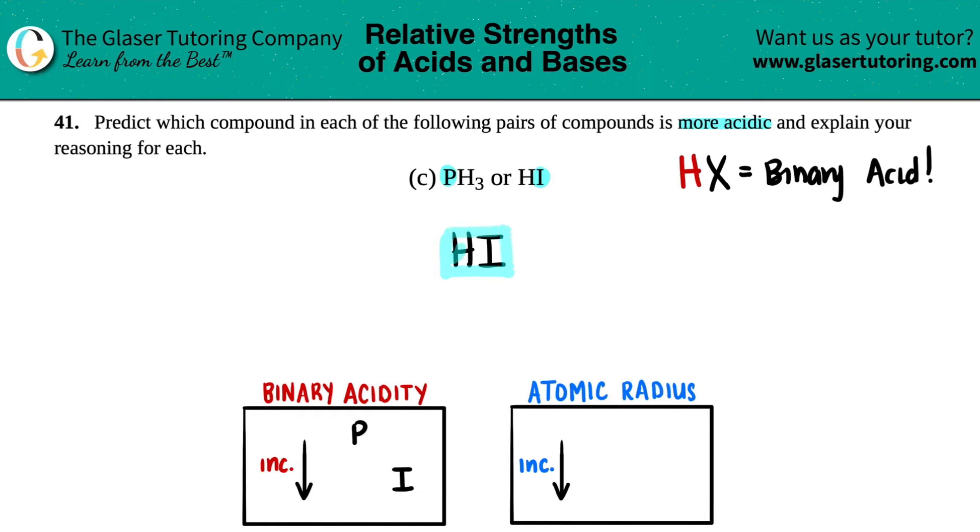Now, if we wanted to give more of a reasoning, we would look at the atomic radius. Now, P is over here, iodine is over here, right? And as you drop down on the periodic table, your radii for your elements are going to get so big.